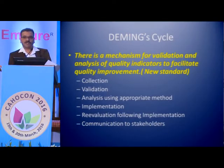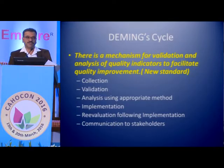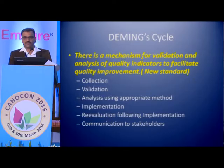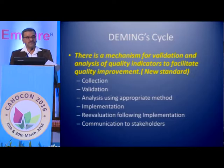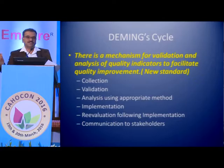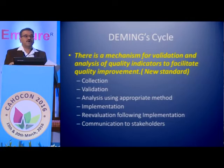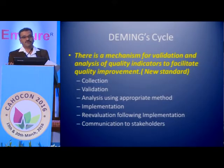In data collection, a new standard has been made about data collection and analysis. If the collected data has an incorrect sample or incorrect data, what is the use of that data? And if we form corrective and preventive action based on that data, it is going to be as useless as the data. So there has to be a validation mechanism — how we validate, who validates, that needs to be figured out. Analysis using appropriate methods has been stressed — everything is not fishbone analysis alone. There are many other quality tools which need to be appropriately used.